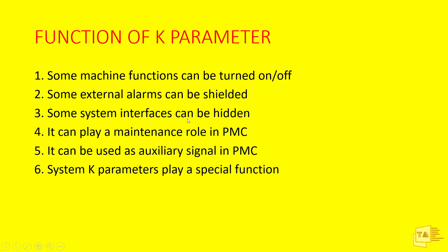Some system interfaces can also be hidden, which I'll show later in this video. The K Parameter can also play a maintenance role in the PMC and can be used as an auxiliary signal in the PMC. For example, for external alarms we can bypass the sensor input. If I'm using input X0.0, instead of X0.0 I'll assign Keep Relay K0.0 and permanently turn on K0.0 — this provides the sensor signal and allows me to bypass and shield the alarm.